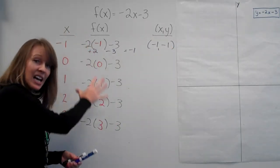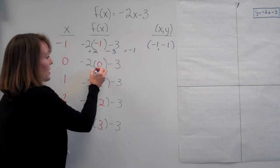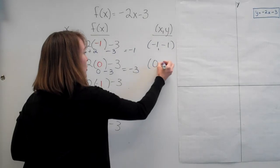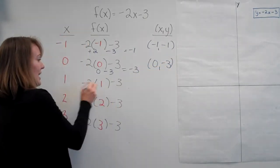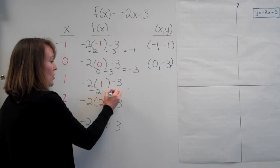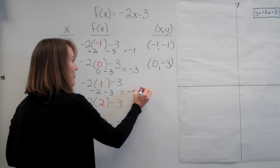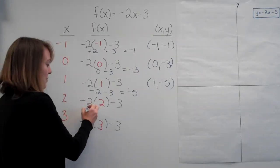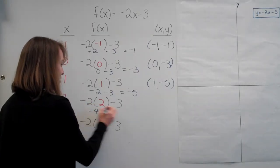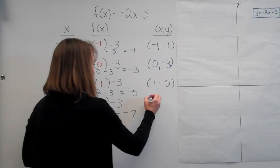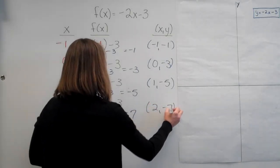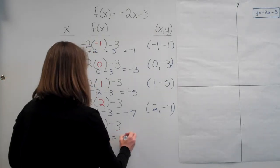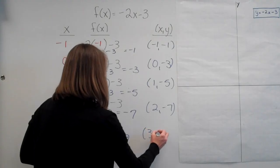And we're going to do that for the entire set. So negative 2 times 0 is 0, minus 3 would give me negative 3, so 0, negative 3. Negative 2 times positive 1, negative 2, minus 3 is negative 5, so 1, negative 5. Negative 2 times 2, negative 4, minus 3 is going to give me negative 7, so 2, negative 7. And finally, negative 6, minus 3 is going to give me negative 9, so 3, negative 9.